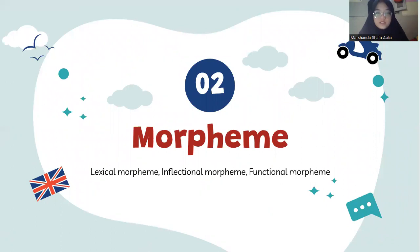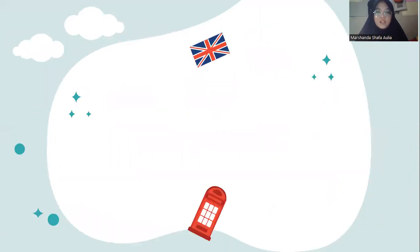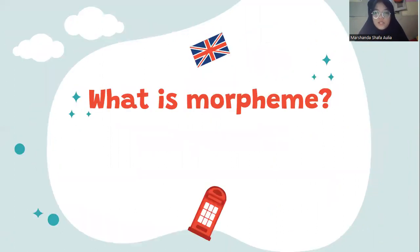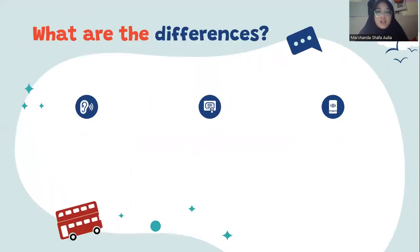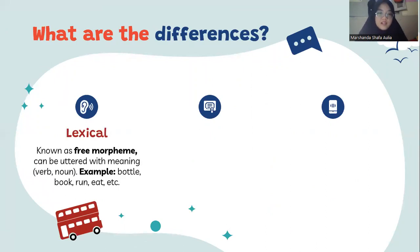Then we move to morpheme. Morphemes include lexical morphemes, inflectional morphemes, and functional morphemes. A morpheme is the smallest meaningful morphological unit of a language that cannot be further divided or analyzed. What are the differences between all of the morphemes?